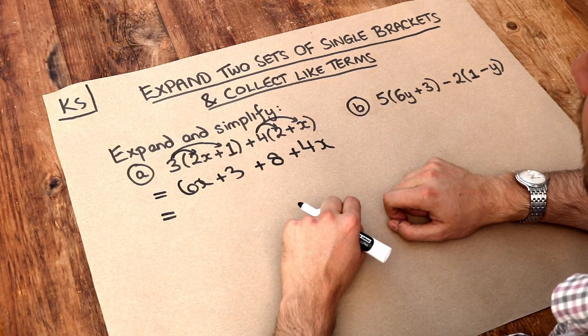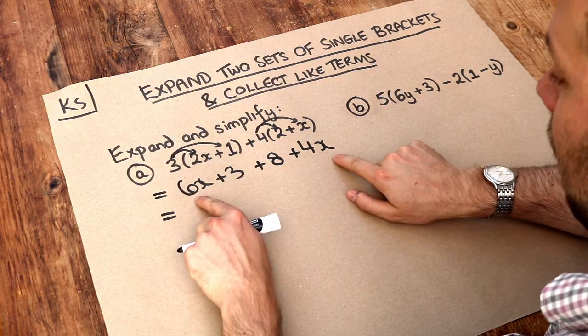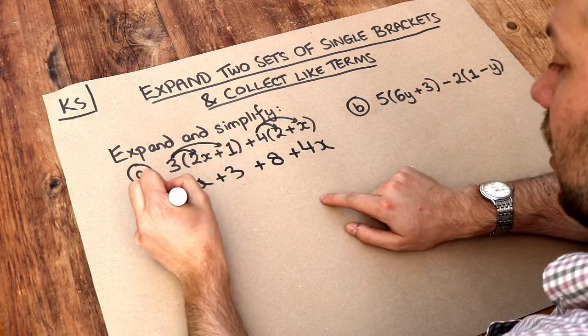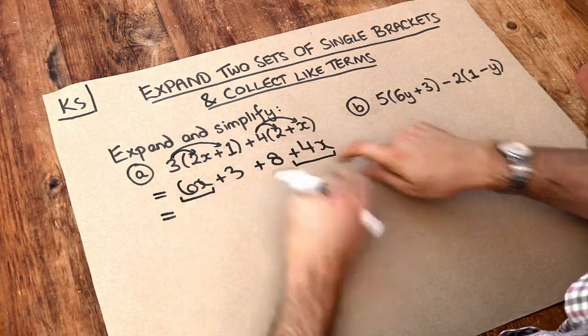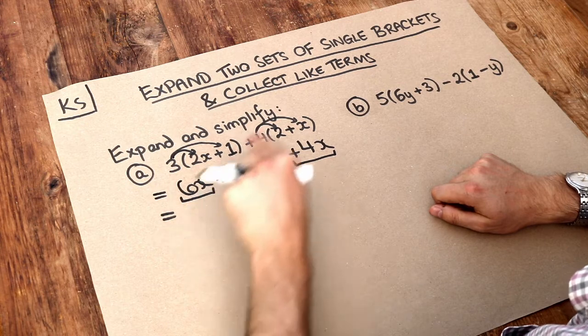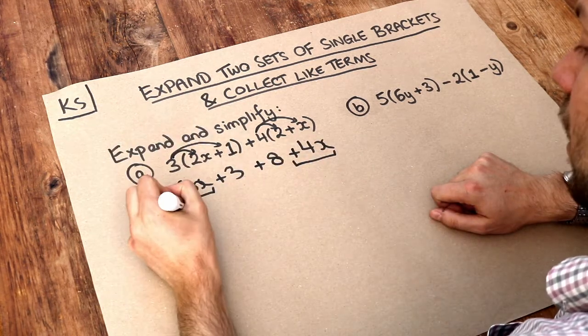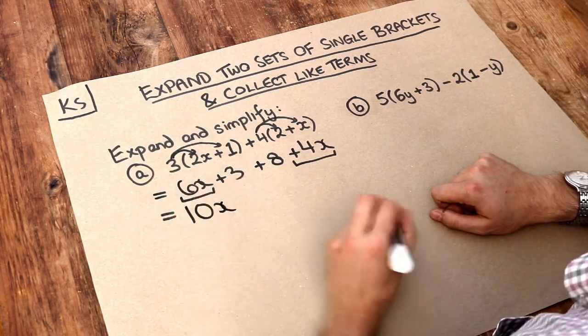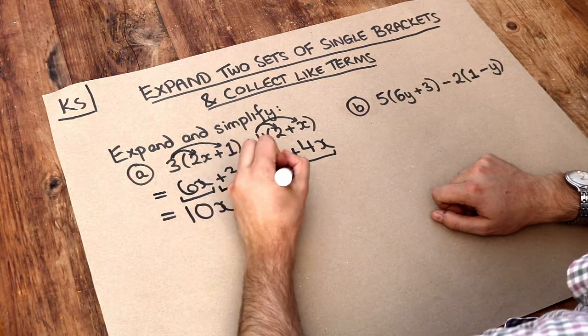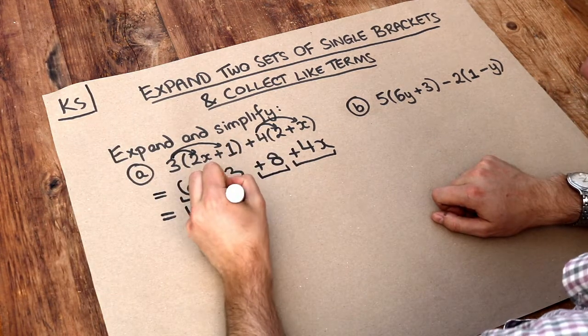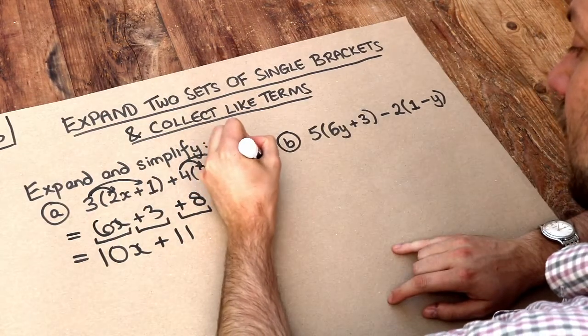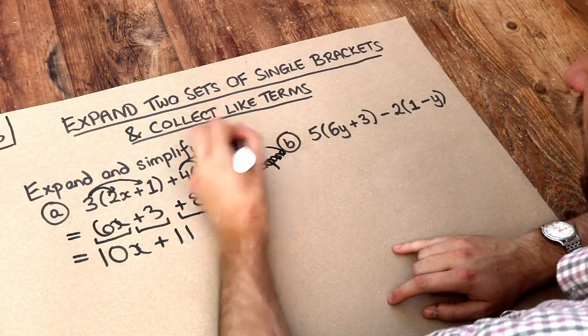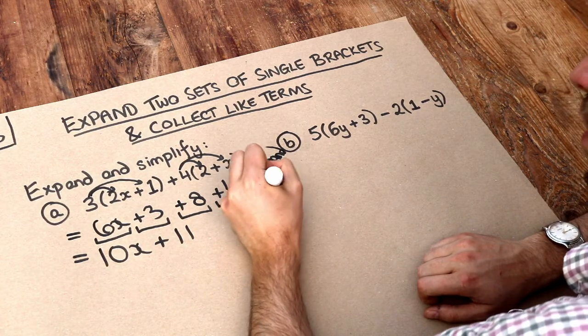Now remember collecting like terms is when we combine together any similar terms. So you can see the 6x here and the plus 4x we can combine them together because 6 lots of x plus 4 lots of x would be 10 lots of x. And we've also got the plus 3 plus 8 and 3 plus 8 is obviously 11. So this bit was the expanding bit and this bit was the simplifying bit.